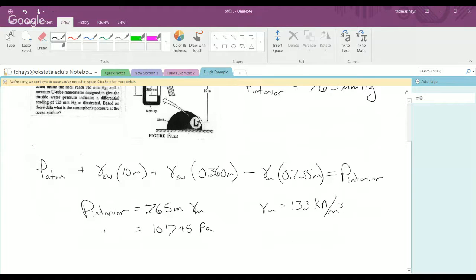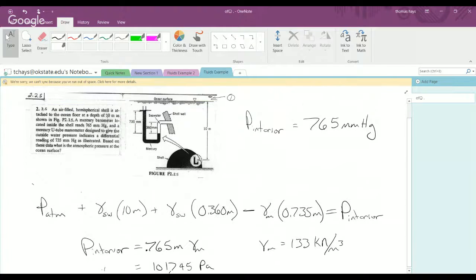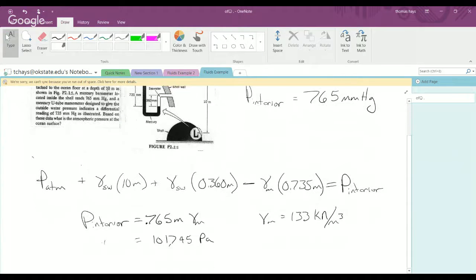So that was the interior pressure. So now we can actually go through the manometer, the rest of the manometer problem, and get rid of the only unknown variable, which to this point had been P interior. We now have a number for that. The rest of these numbers like specific weight of mercury, specific weight of seawater, can be looked up in tables.